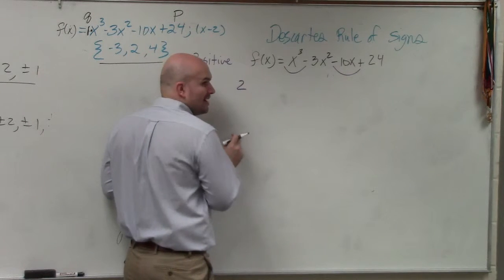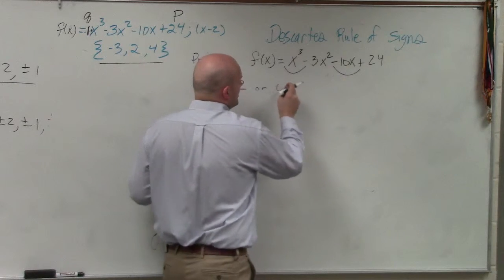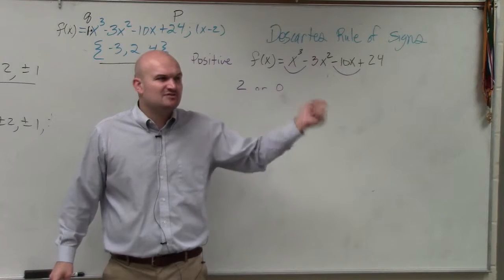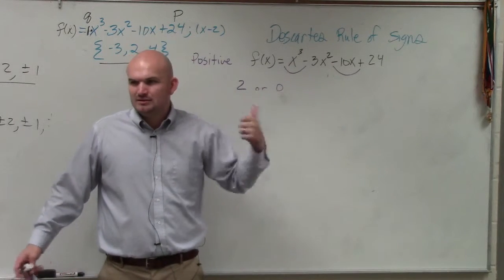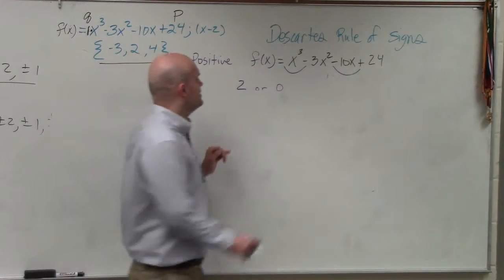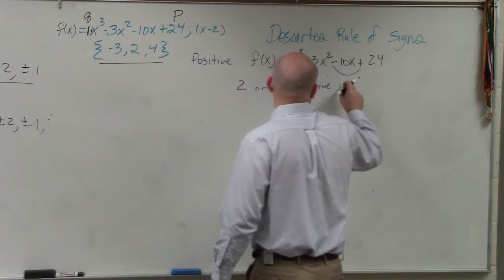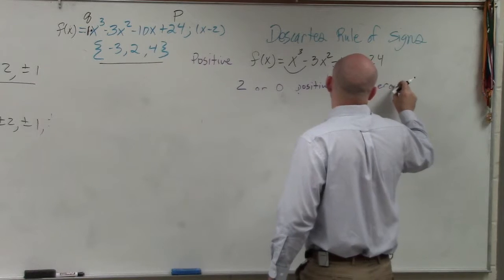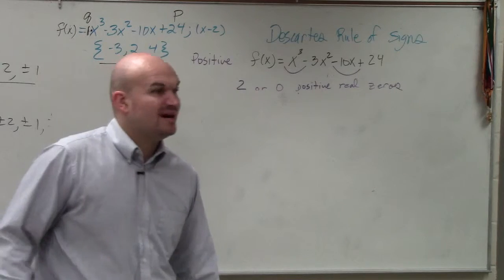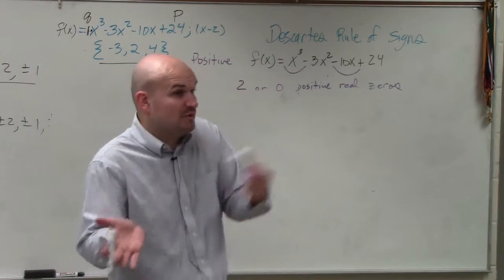So how many sign changes do I have? Two. What's an even number I could subtract from two? Two. So two minus two is? Zero. You could subtract four, but four would give you negative two, right? Can you have negative two of something, like an amount of numbers? No, right? You can't have, so it's not really going to work in this case. So it's two or zero positive real zeros. Again, it doesn't tell you how many exactly positive real zeros. It's just telling you it's going to be one or the other.